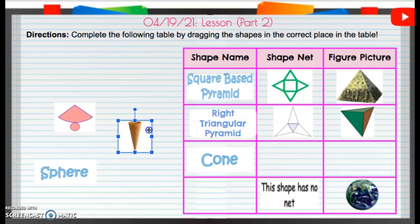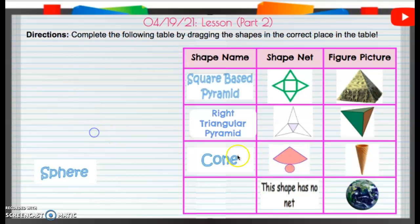A cone, you guessed it, just like an ice cream cone. Don't let it fool you. And when you unfold that ice cream cone with the top closed in, you will get the net for an ice cream cone.